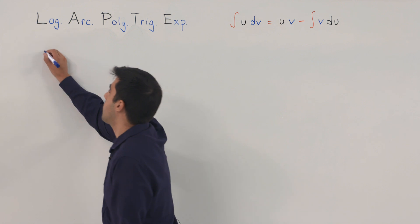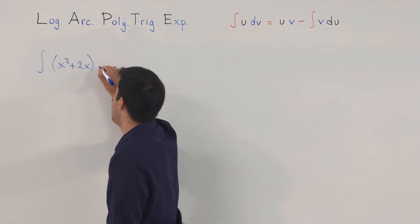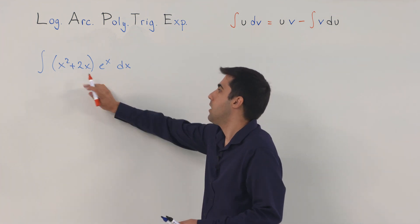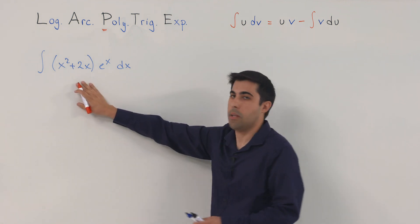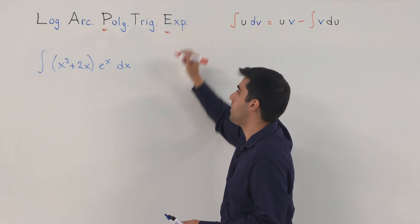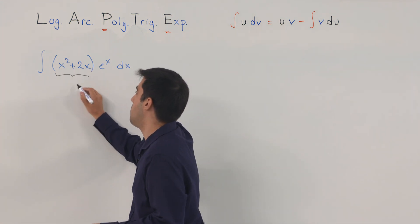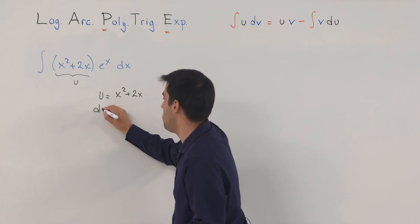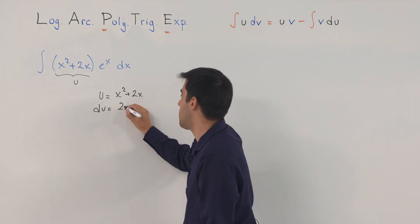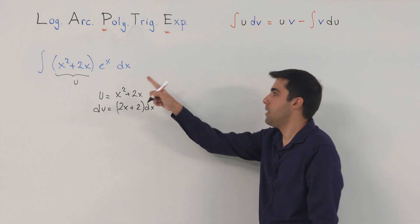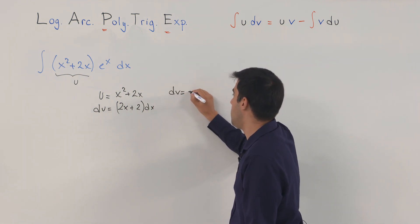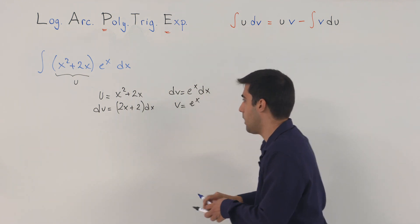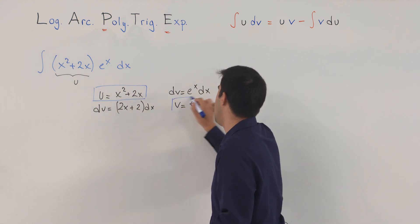Consider the integral of (x squared plus 2x) times e to the x dx, which is again an integral of a product. The first factor is a polynomial x squared plus 2x, and the second factor is an exponential function e to the x. That means I need to call the polynomial u. So if u is x squared plus 2x, then du equals (2x plus 2) dx. What is left is dv: dv equals e to the x dx, meaning v equals e to the x.